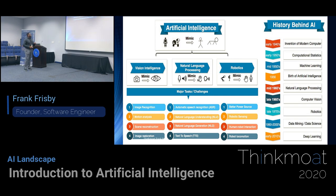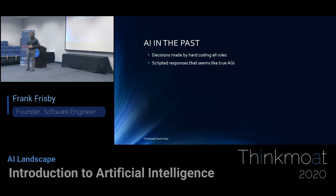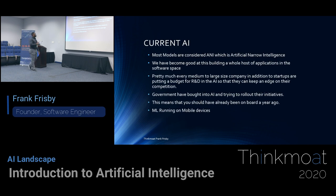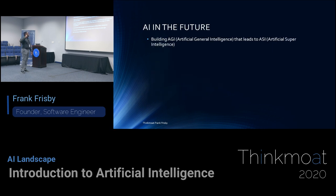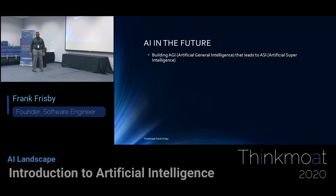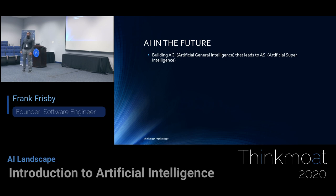AI in the past was scripted if-then statements — not so great. Current AI is where we are now: deep learning, artificial neural networks, a lot of regression. In the future, AGI — this is where you want to put your money, because this is where companies are going to spend a lot of time. And then beyond that is ASI, artificial superintelligence, which is even further beyond AGI.